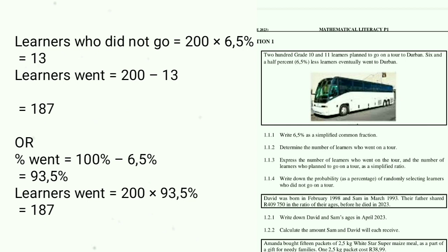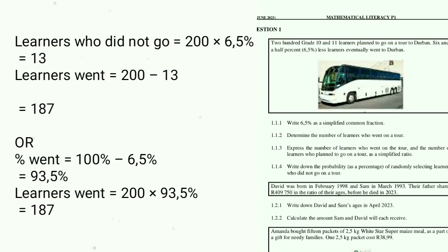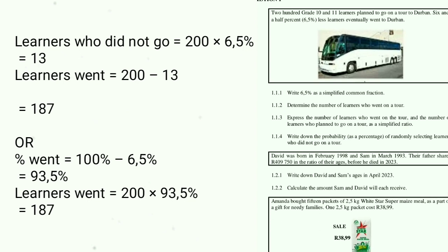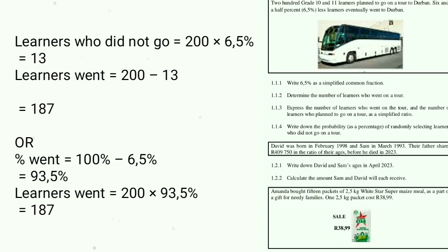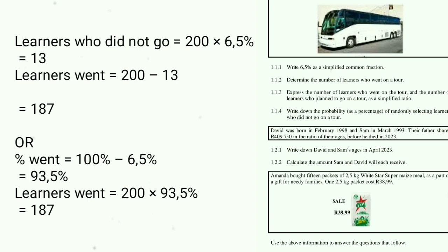Remember the question says 6.5% fewer learners eventually went to Durban — that means 6.5% are the ones who did NOT go. It's a tricky English interpretation: 200 learners planned to go, and 6.5% fewer went. So 200 × 6.5% = 13 learners did not go, and 200 minus 13 = 187 learners went to the tour.